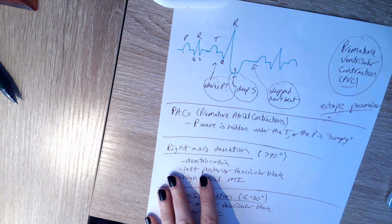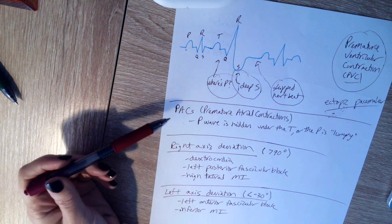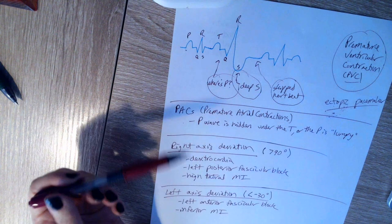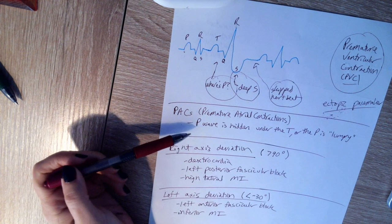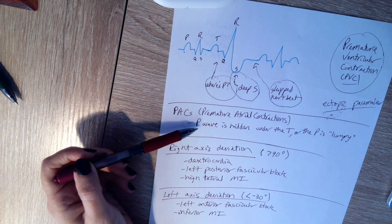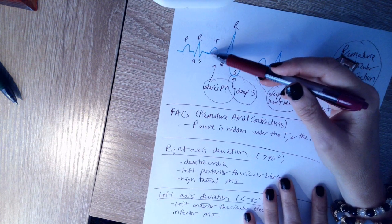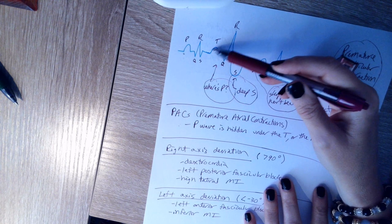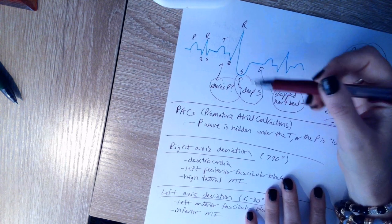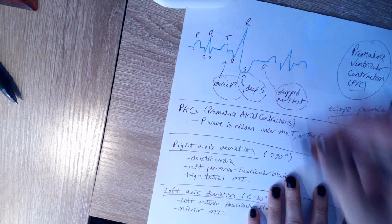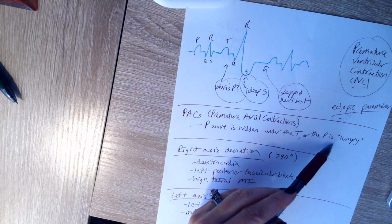Now premature atrial contractions. This one, I won't ask you to identify on an EKG, but I would ask it as a question. So if you can describe it verbally, it's the same idea as a PVC, but it's something that's happening in the atria instead. So an ectopic pacemaker in the atria. And what it looks like on an EKG is that the P wave might be hidden under the T. So you would still have sort of a situation. That's why I didn't want to include it as a picture that I would ask you to see is that it would still look like you just don't have a T or a P. You would have the T and then no P and go right into QRS because the P would be happening in the T essentially. But you just went, you would not have that deep S. So that's how it looks different from a PVC. Or you just might have a funky, lumpy looking P going on there.